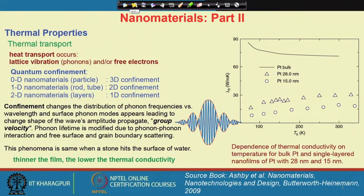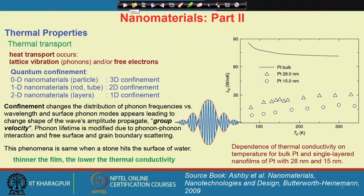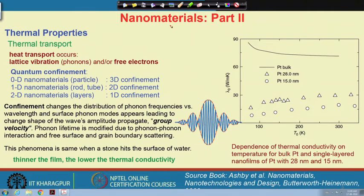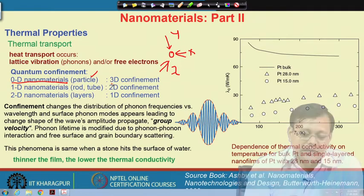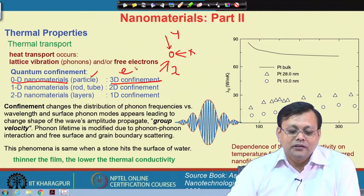In heat transfer phenomena, two mechanisms are involved in heat transport: lattice vibration and free electrons. Lattice vibration is linked with phonon vibration, and free electrons carry the heat. For a 0D nanomaterial like a nanoparticle, electrons are confined in x, y, and z directions — this is called 3D confinement.